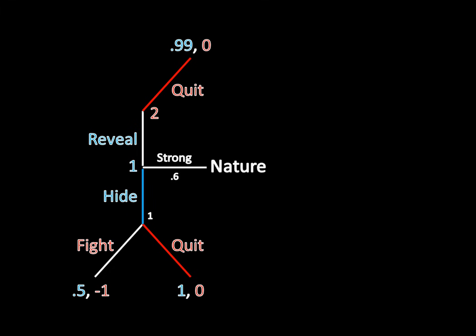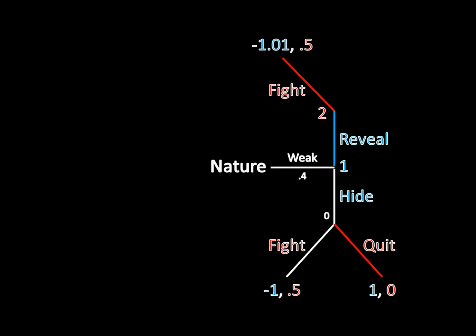Now let's check to see if the weak type would want to deviate. In this proposed equilibrium, he reveals the information that he's weak, and Player 2 fights him. That gives him a payoff of negative 1.01. If he were to deviate and hide, then Player 2, under the false assumption that Player 1 is a strong type, quits. And in that case, Player 1 as the weak type gets a payoff of 1. That is a profitable deviation. So this is not a perfect Bayesian equilibrium.